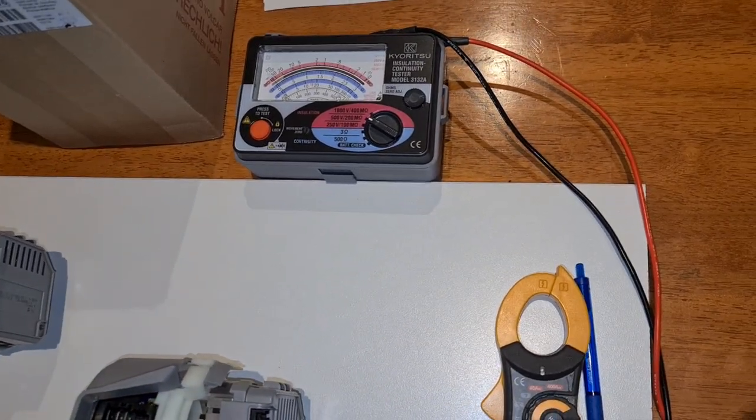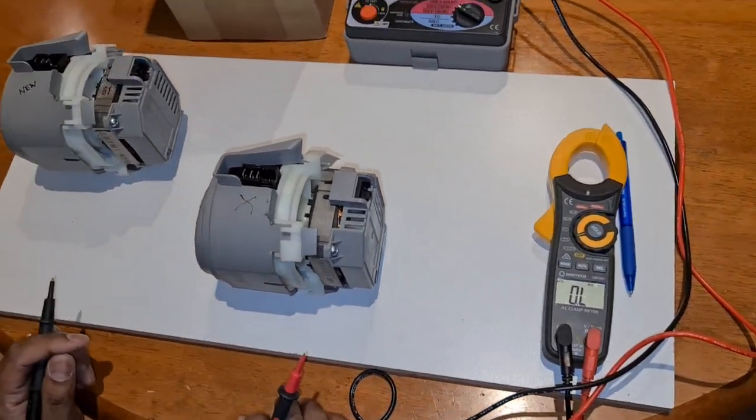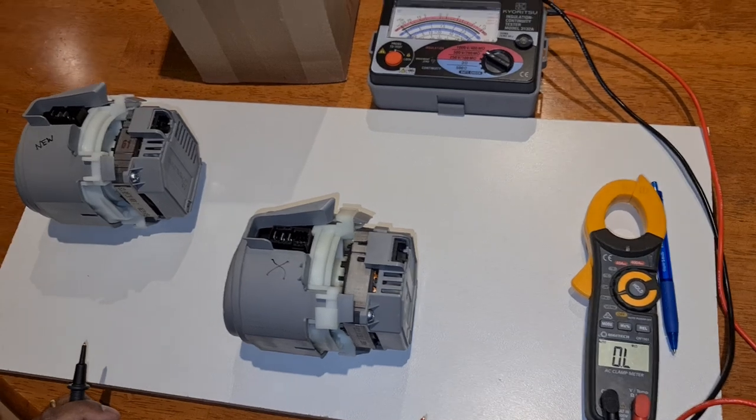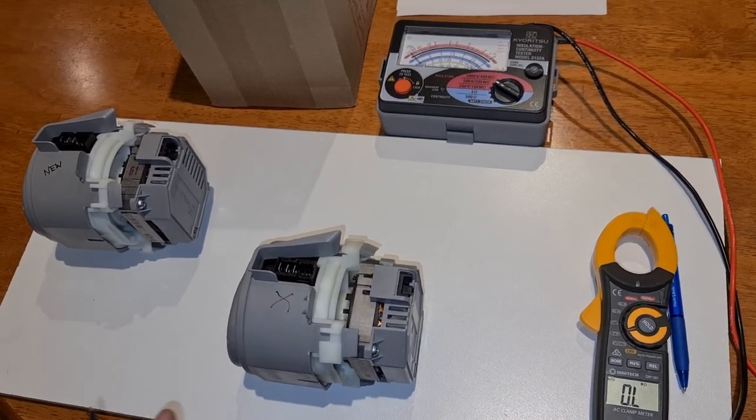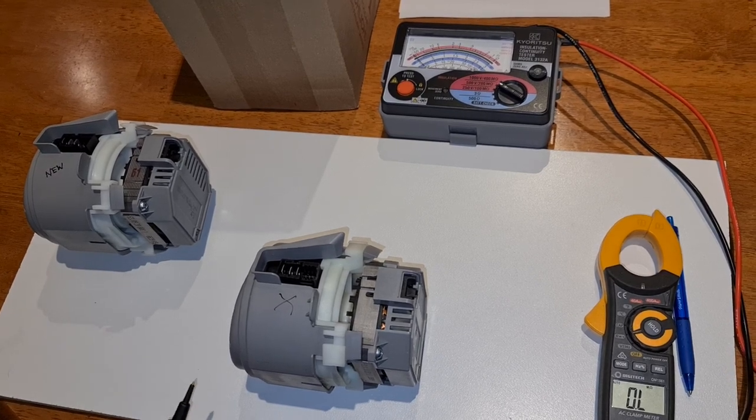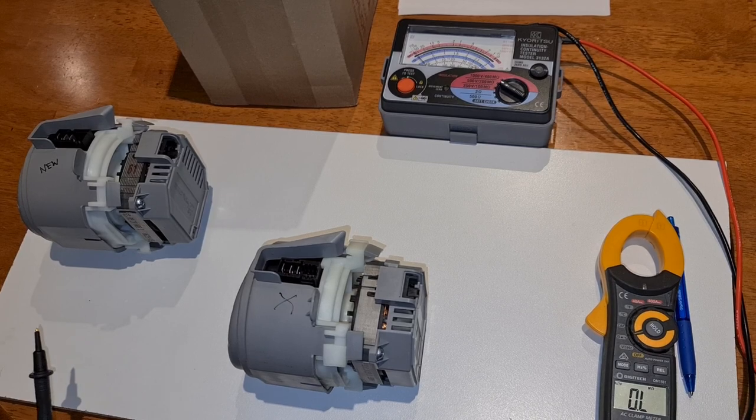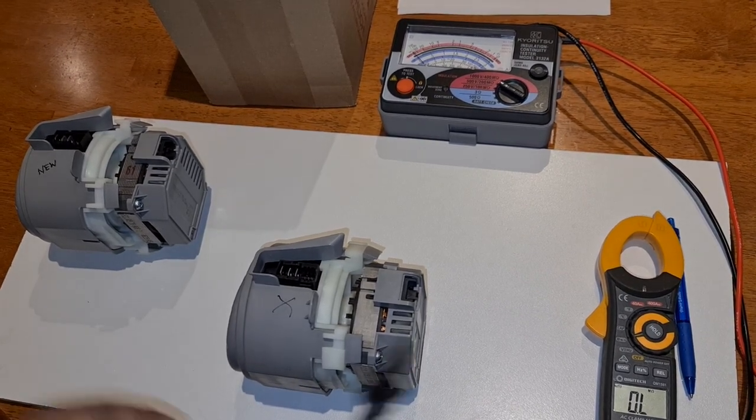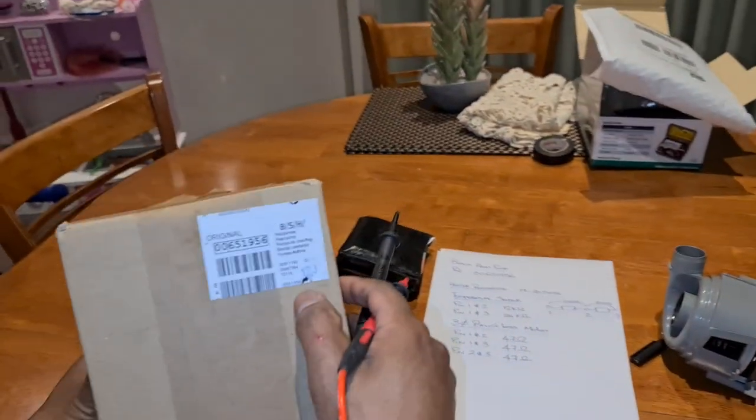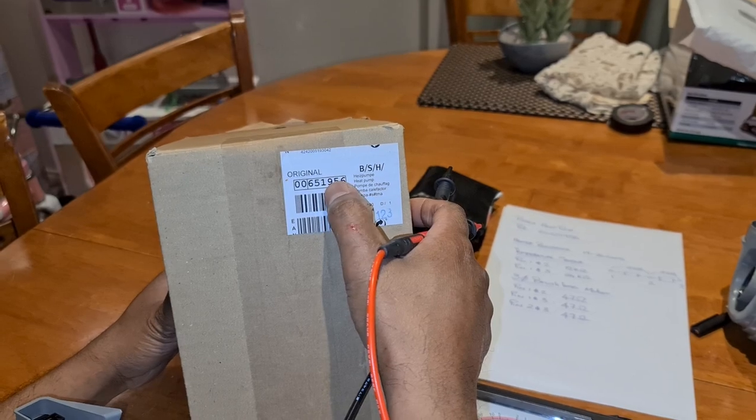So the multimeter method, if anyone tells you to use the multimeter to do insulation testing, it's a device that's not designed for that purpose. So this is how we do some basic testing to verify that the heating element is actually working properly on a Bosch heat pump. And the particular pump that we're looking at over here is 00651956.